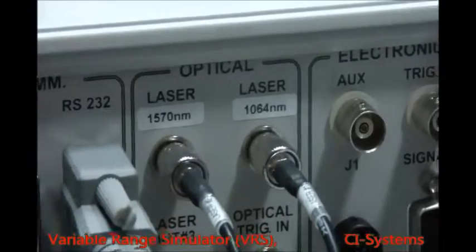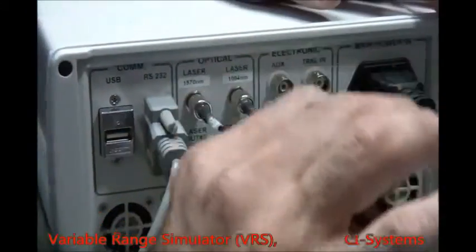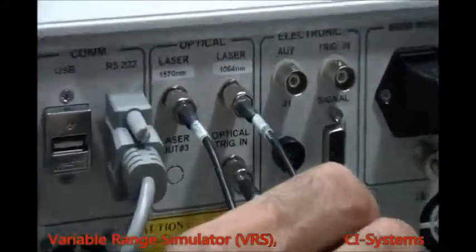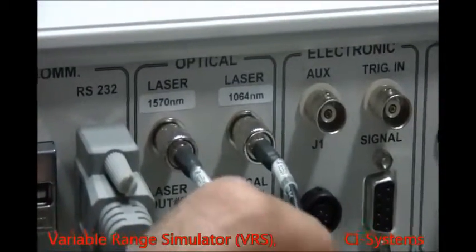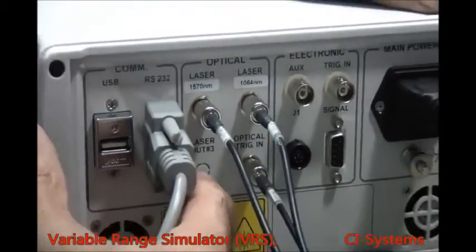On the output, since this is a dual wavelength VRS, you have two fiber optic outputs. One is a 1.06 wavelength laser output and one is a 1.57 in this case. As I said before that we can have up to three, so here we can see that this is the third output.